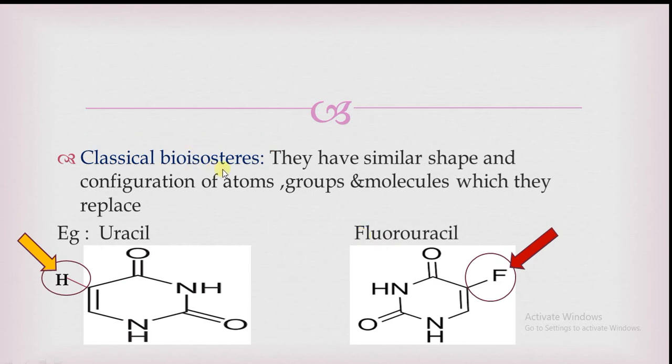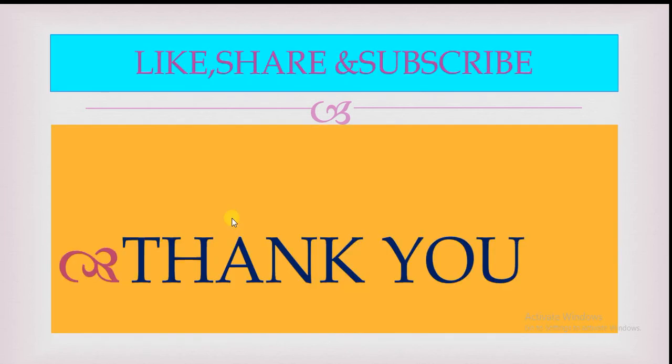Classical bioisosteres are further categorized into monovalent classical bioisosteres, divalent classical bioisosteres, trivalent, heterocyclic compounds, and so on. However, we are not discussing these in detail in this video. Thank you.